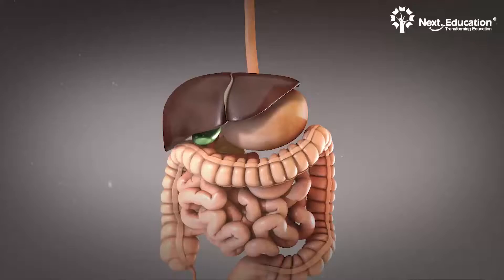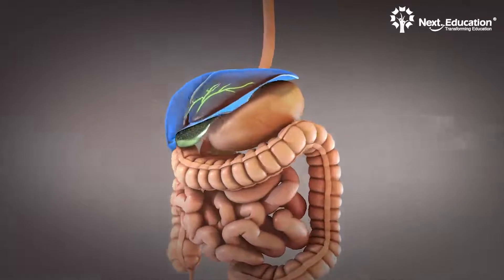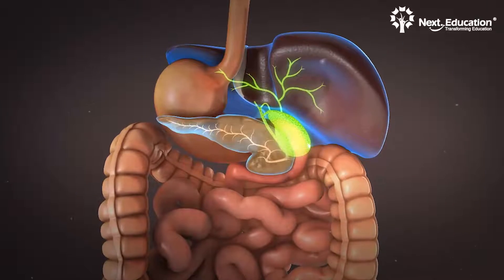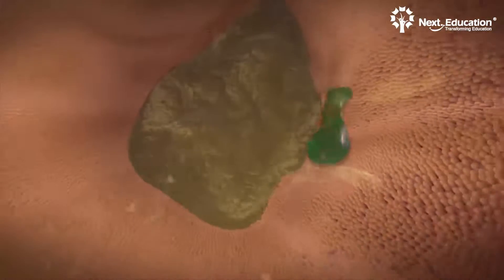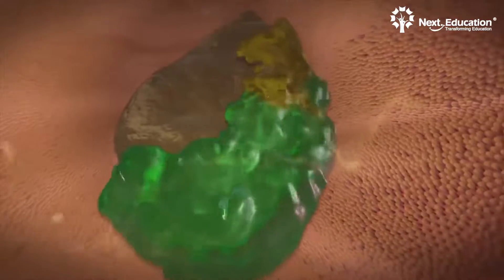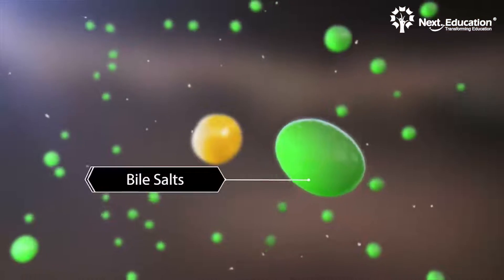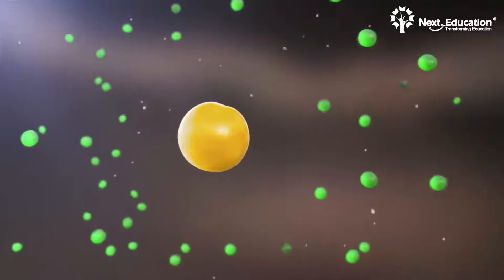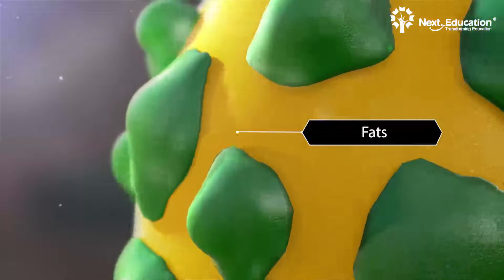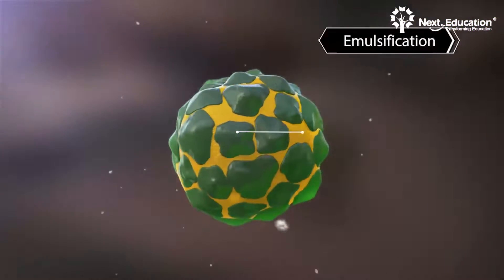The acidic chyme in the duodenum stimulates the secretion of hormones, which in turn activates the liver and the pancreas to secrete bile and pancreatic juices respectively. These juices make the chyme alkaline. The secreted bile contains bile salts, which break down the fat into smaller globules. This process is called emulsification.